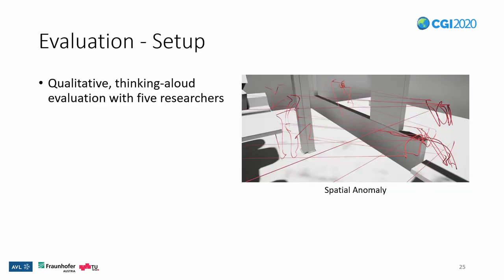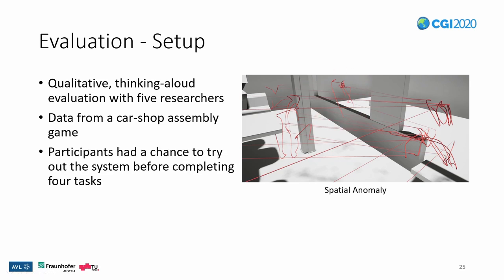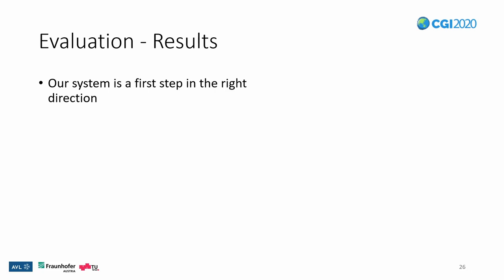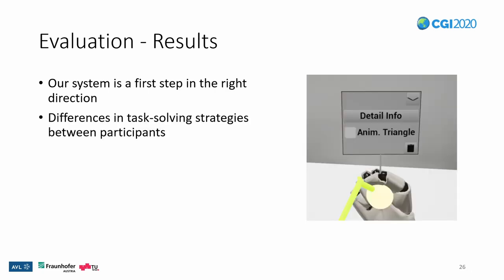To evaluate our implemented system, we performed a small qualitative think-aloud evaluation with five researchers in the field. We used observations from users of the car shop assembly at a public event to create the evaluation data. Before performing the four tasks, participants had a chance to familiarize themselves with the system, and afterwards they filled out a system usability score. We found that our system is a first step in the right direction — participants' use of the given tools varied per person, indicating that the freedom for different approaches is valuable. In some instances, we had to remind participants of some tools, which may be because the initial familiarization was too short.